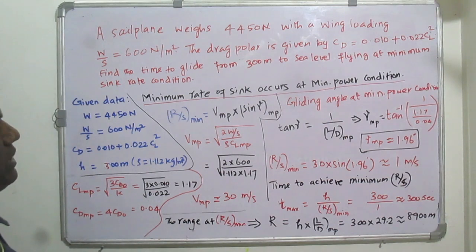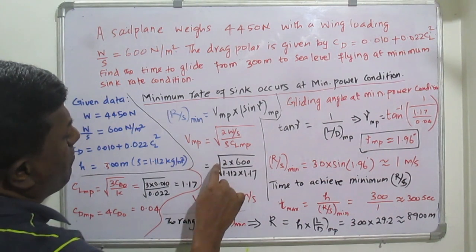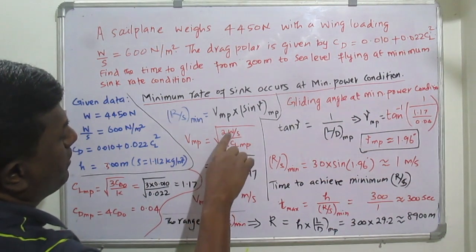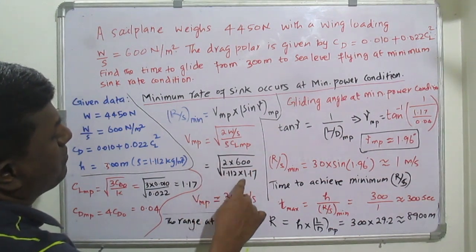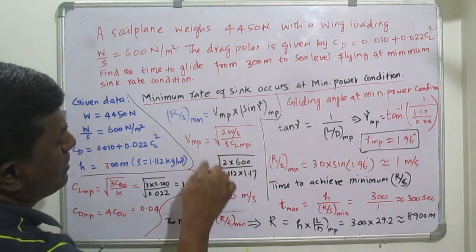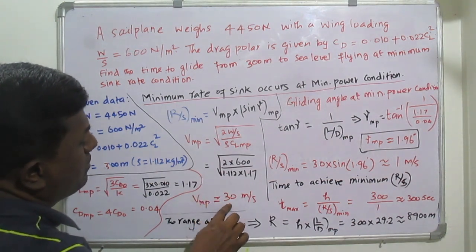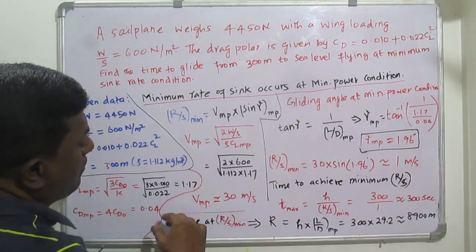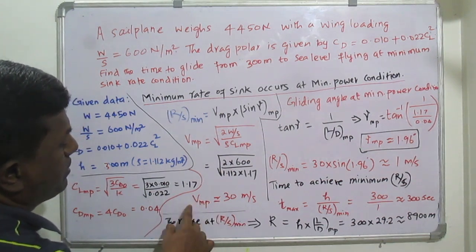Now we find the velocity at minimum power using the standard formula. Substituting wing loading = 600 N/m², density = 1.112 kg/m³, and CL_min_power = 1.17, we get V_min_power ≈ 30 m/s.